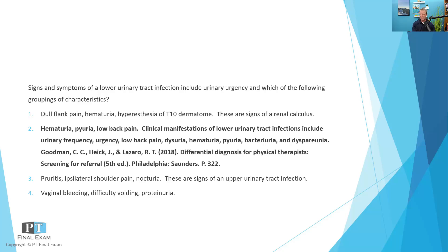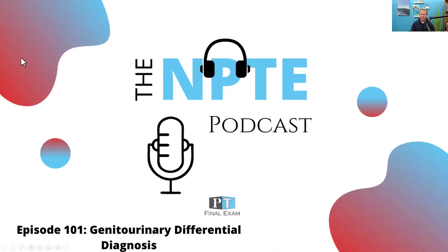Bottom line: lower urinary tract infections typically have hematuria and pyuria — red blood cells and white blood cells in the urine — combined with low back pain and groin pain. So there you go, a little question about differential diagnosis of the genitourinary system. Remember, there are only four to seven questions here, but definitely something worth spending a little bit of time on.